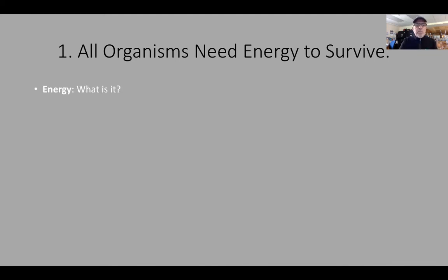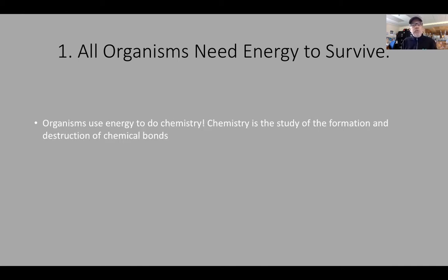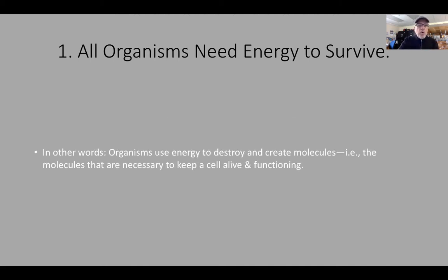First, all organisms need energy to survive. In order to understand this, we have to ask: what is energy? From physics, we find that energy is the ability to do work, and work is the ability to exert a force over a distance. So for our purposes, energy is the ability to exert forces. Organisms use energy to carry out chemical reactions, and chemistry is the study of the formation and destruction of chemical bonds. So organisms use energy to destroy and create molecules.